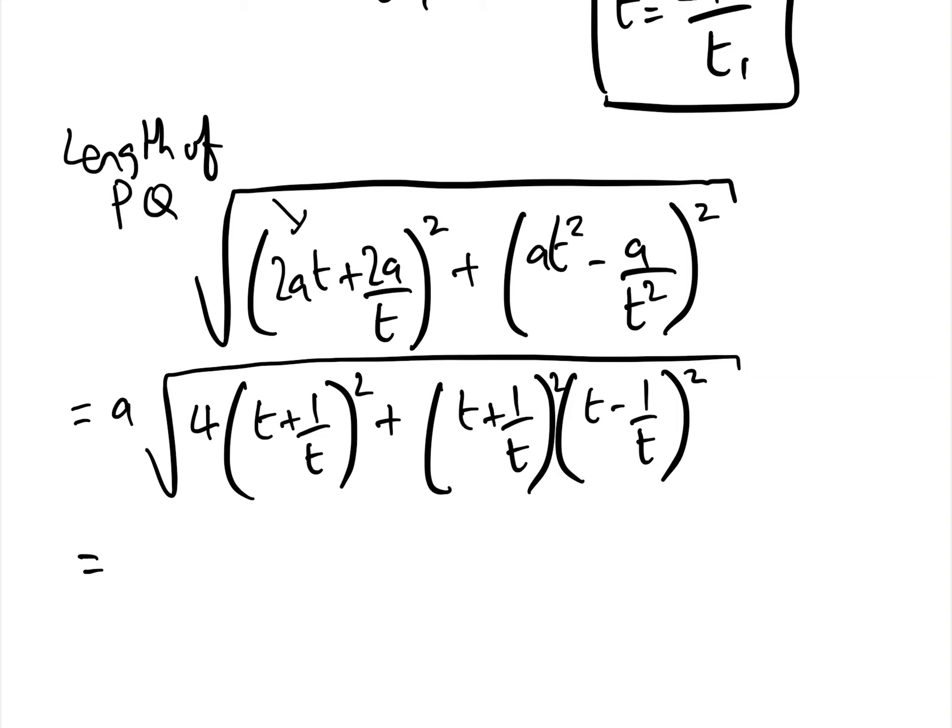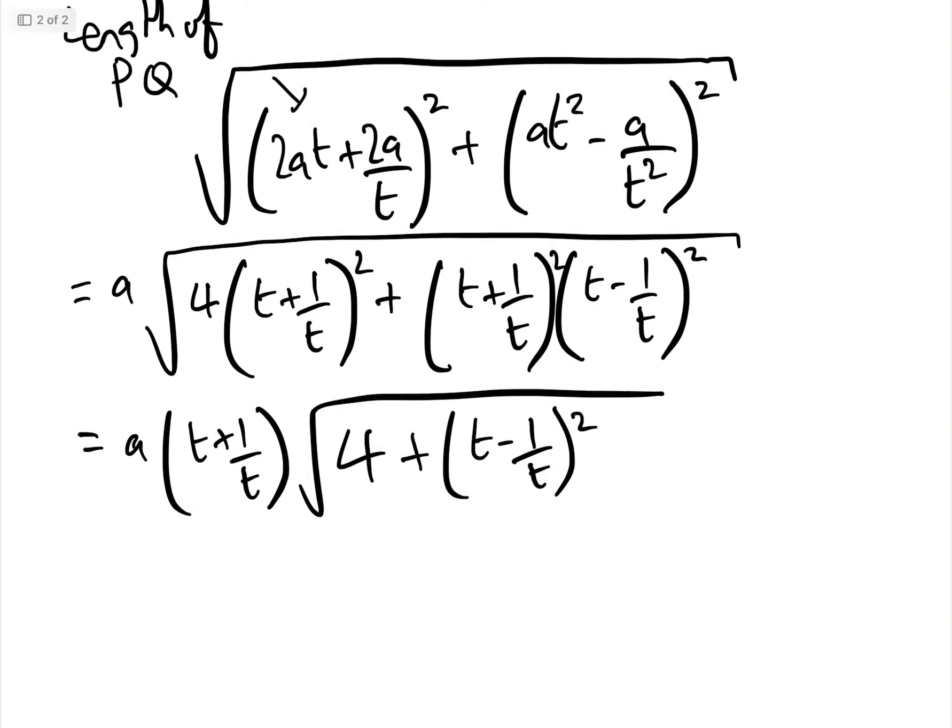And we can now take t plus 1 over t squared out of the square root, so that gives us a times t plus 1 over t, root 4 add t minus 1 over t squared.